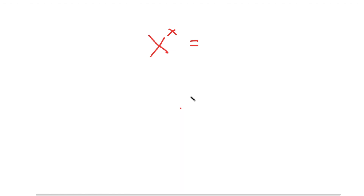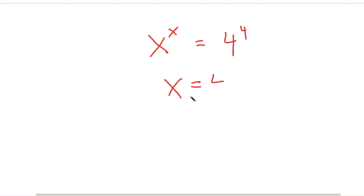So in this case, I have x to the power of x is equal to 4 to the power of 4, and this means that x is equal to 4.